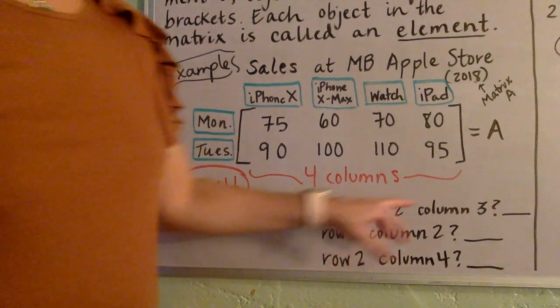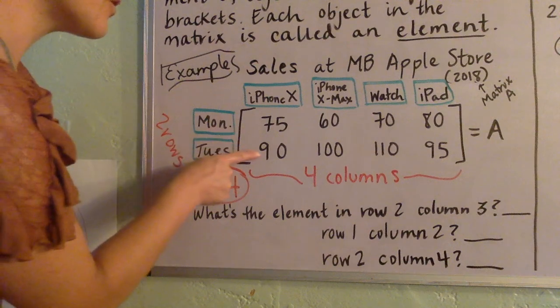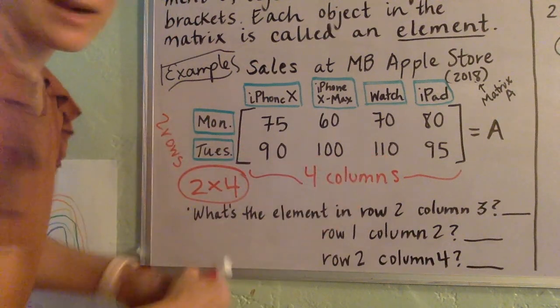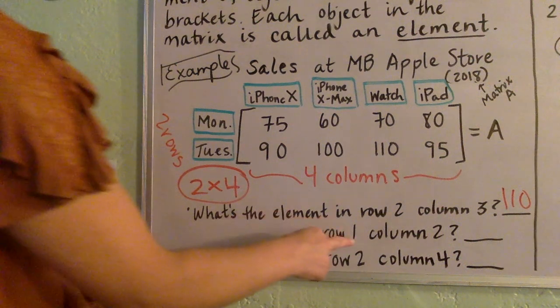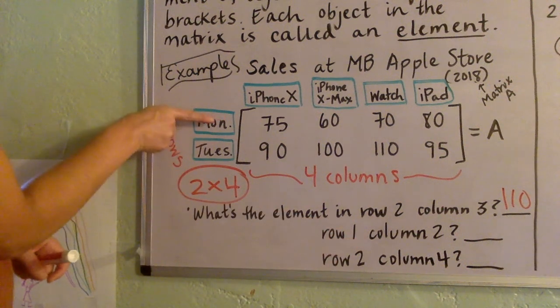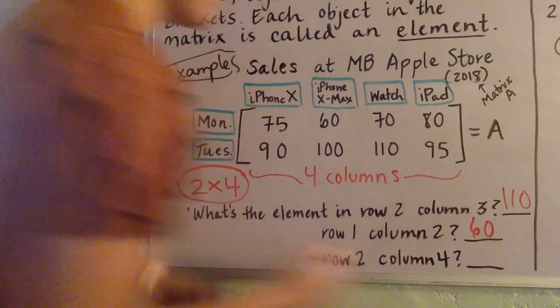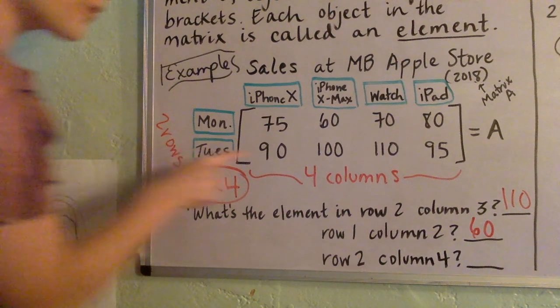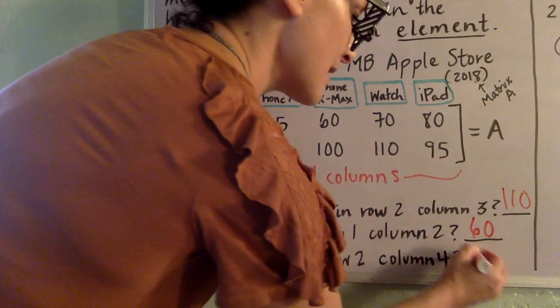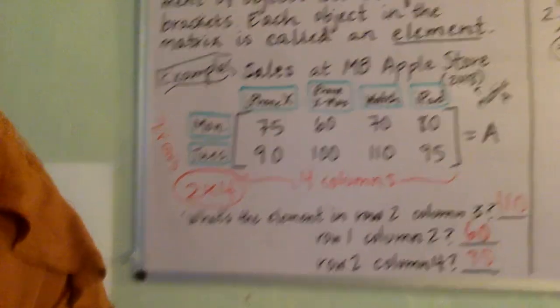What's the element in row two, column three? Let's see. Row two, column three. Hopefully you'll agree that that's 110. What's in row one, column two? Hopefully you'll agree that that's 60. And what's the element in row two, column four? Hopefully you'll agree with me that that would be 95. So just identifying elements that are in a matrix.